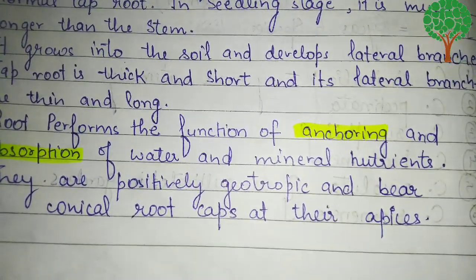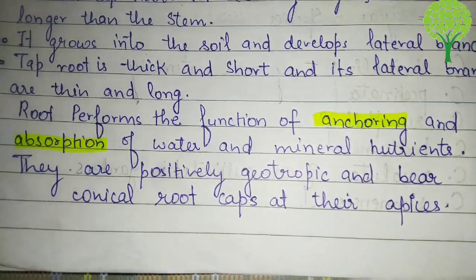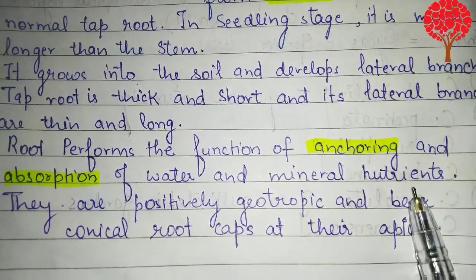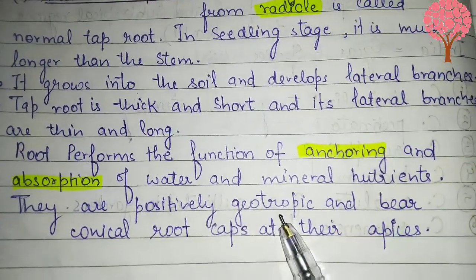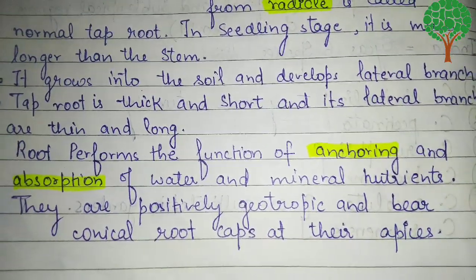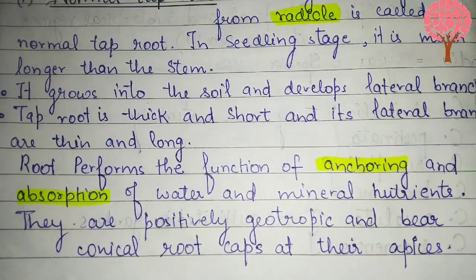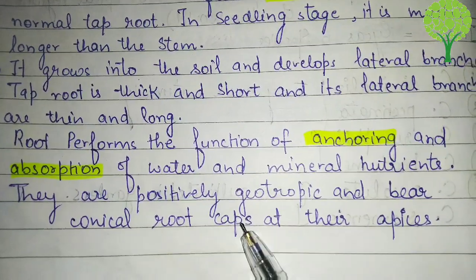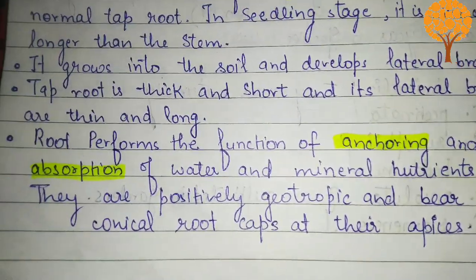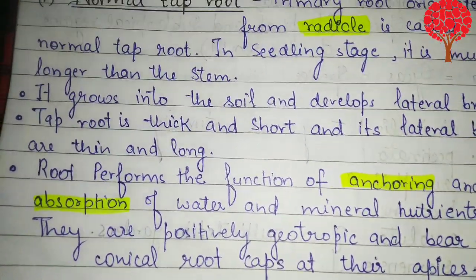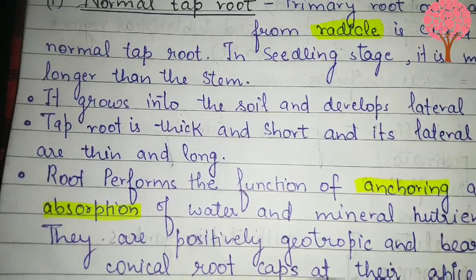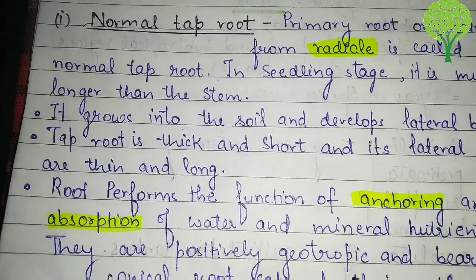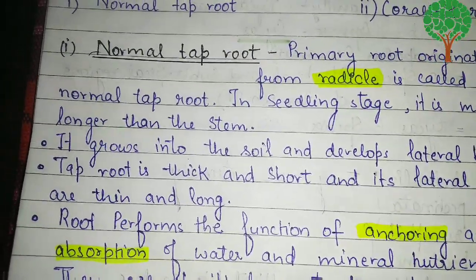The root functions are similar to typical roots: they perform the function of anchoring, which provides mechanical strength, and absorption of water and mineral nutrients. They are positively geotropic because they grow downward into the soil, and negatively phototropic because they grow away from light. They bear conical root caps at their tips for protection, so that the meristematic regions are not damaged or injured.